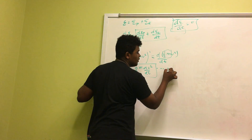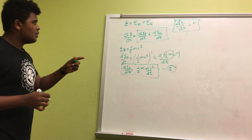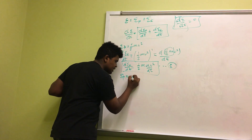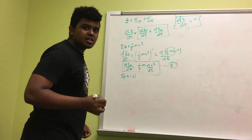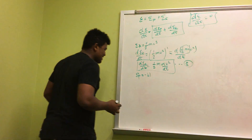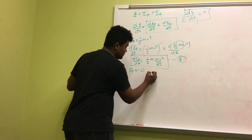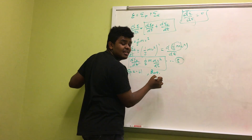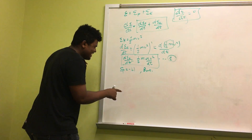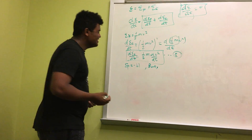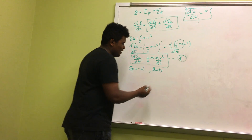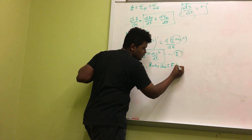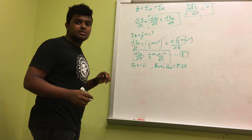What does energy potential mean? It's the negative of work — that's the basic classical physics model. Work is force times displacement: W equals F times delta x, or more precisely the integral of F dx. So force is basically the rate of change of work with respect to x: F equals dW over dx.